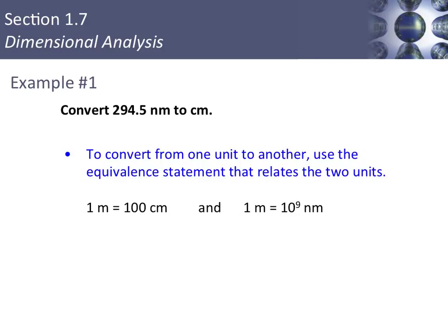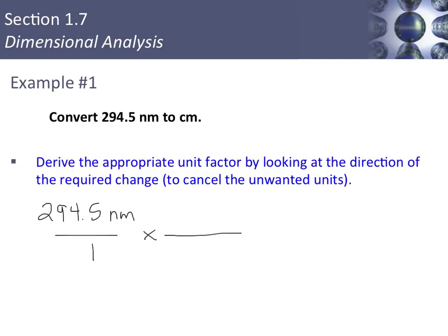Let's say we want to convert 294.5 nanometers to centimeters. We're going to use two equivalence statements: going from nanometers to meters (the base unit), and then from meters to centimeters (the desired unit). We just need to figure out how to set these up so we can cancel the units we don't want. I'm going to start with my 294.5 nanometers, put it over one to make it a fraction, and cancel the nanometers by placing them in the denominator of my conversion factor.